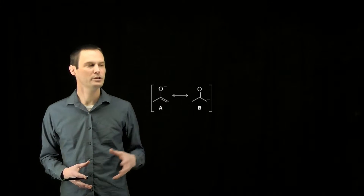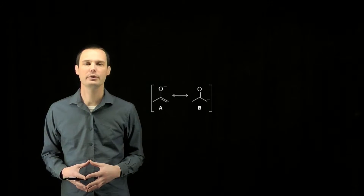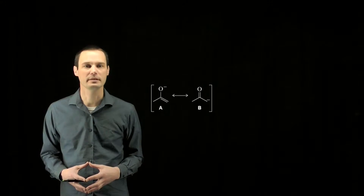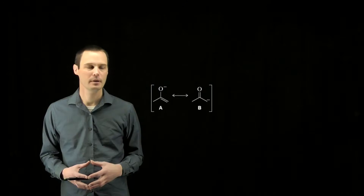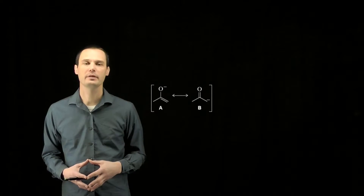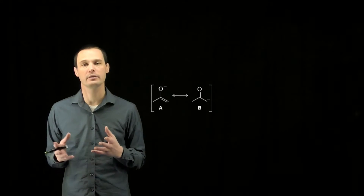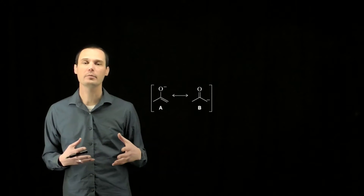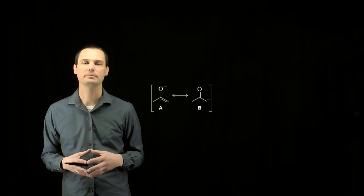This question asks us to predict which of the resonance contributors contributes more greatly to the resonance hybrid. Looking at these two, the difference is the placement of the negative charge — the negative charge is either on carbon or on oxygen.